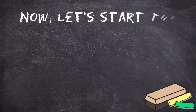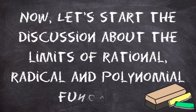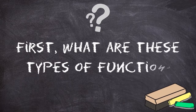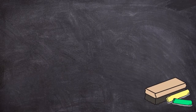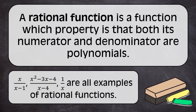Let's start the discussion now about the limits of rational, radical, and polynomial functions. First, what are these types of function? A rational function is a function that is a fraction, and has a property that both its numerator and denominator are polynomials. x over x minus 1, x squared minus 3x minus 4 all over x minus 4, and 1 over x are all examples of rational function.